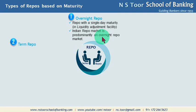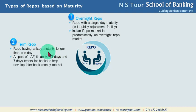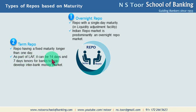Second is term repo. As against overnight repo, term repo means repo transactions which have a fixed maturity longer than one day. In overnight repo the maturity period is only one day, whereas in case of term repo the maturity period is more than one day. The Reserve Bank of India provides these repo transactions as part of the Liquidity Adjustment Facility, and this period can be 7 days, 14 days, or even more.